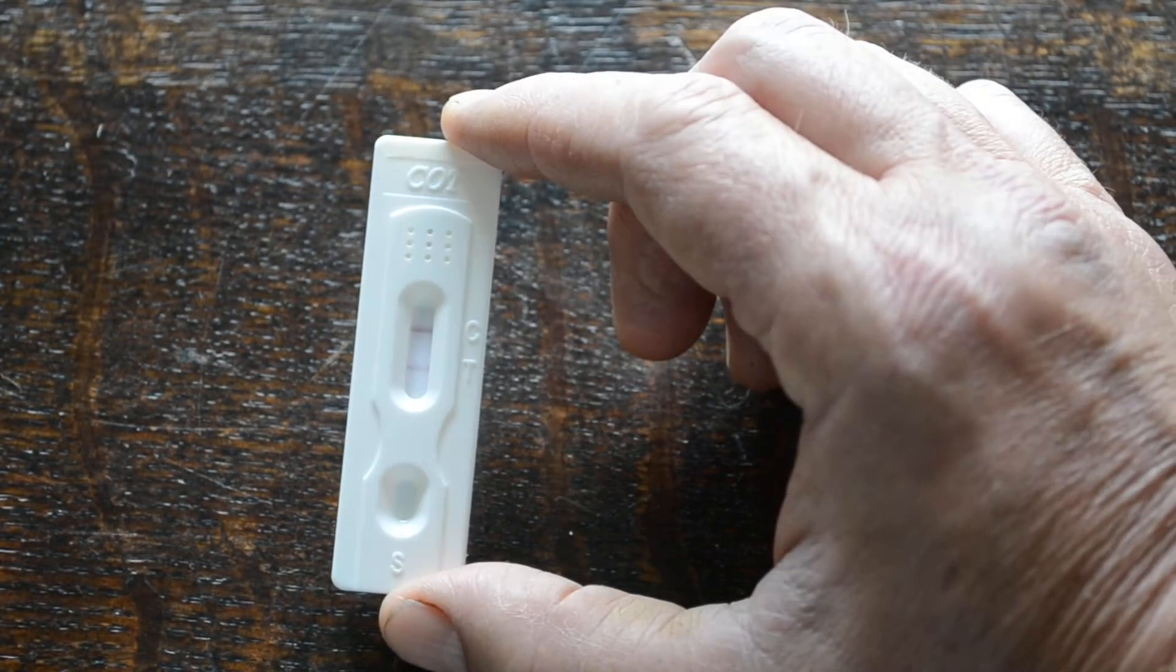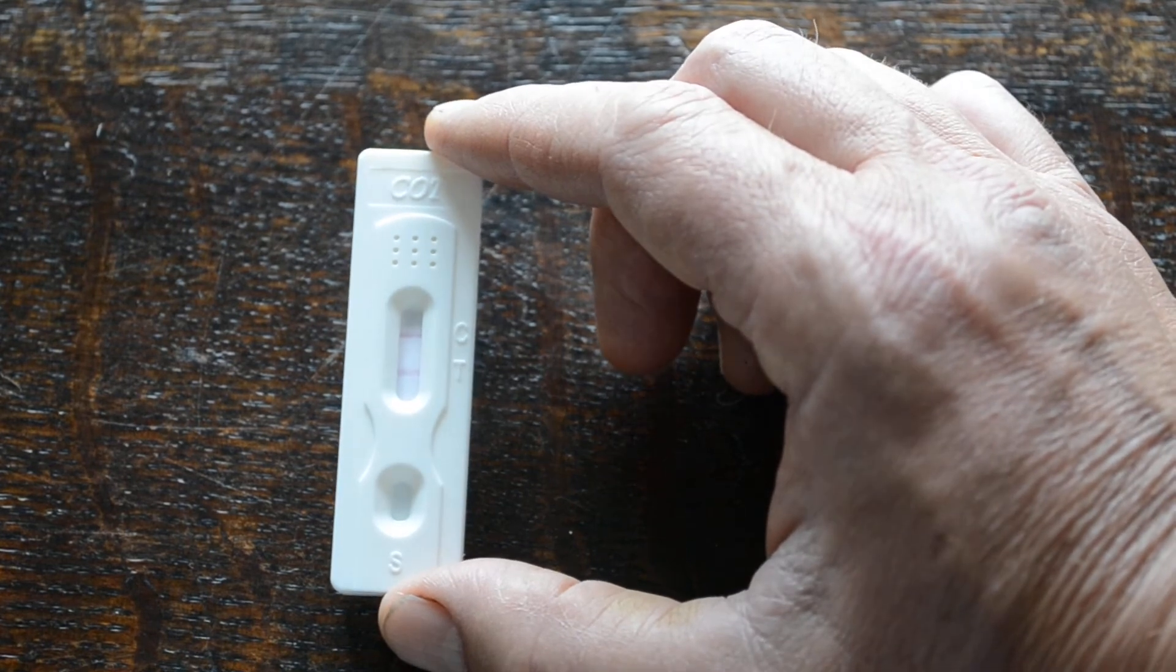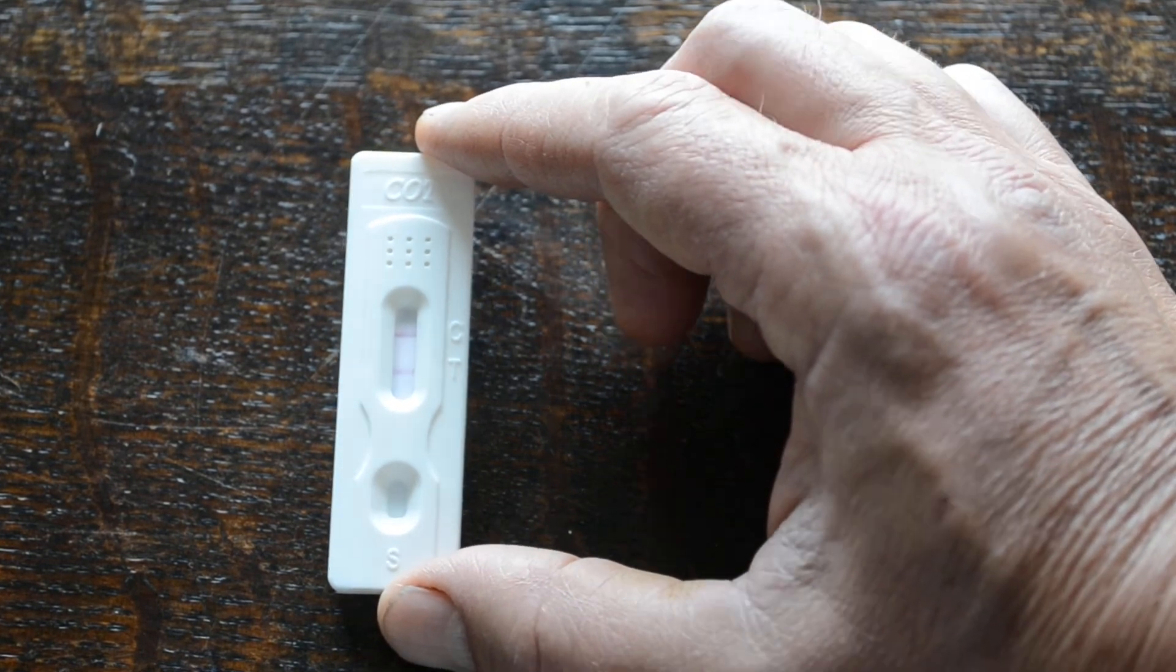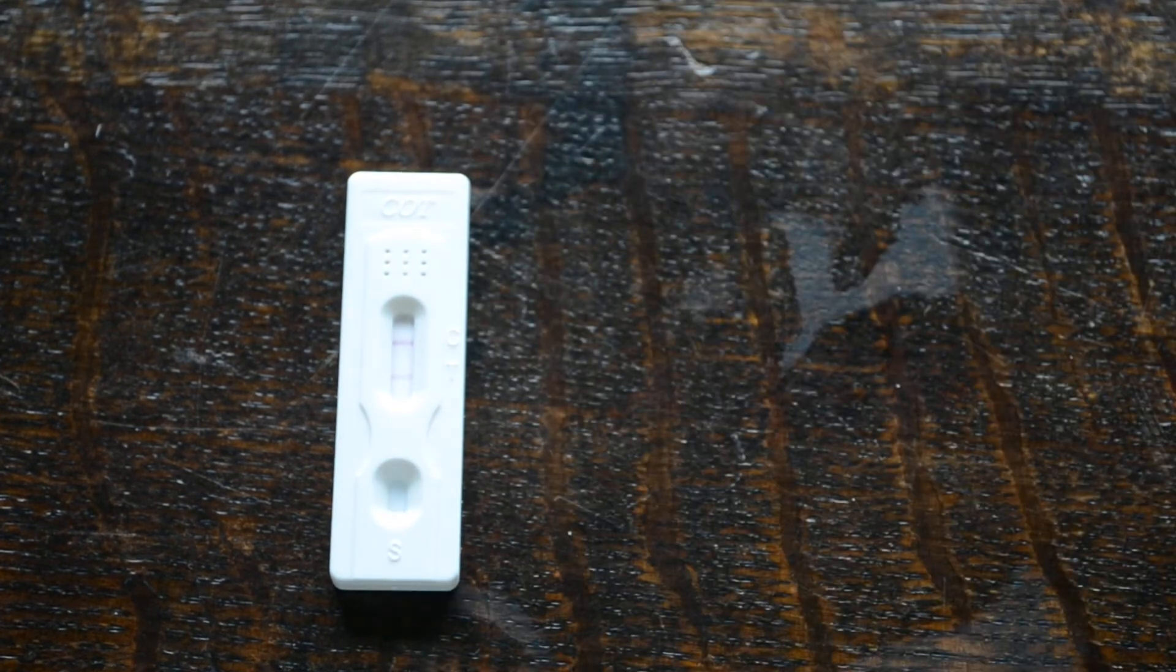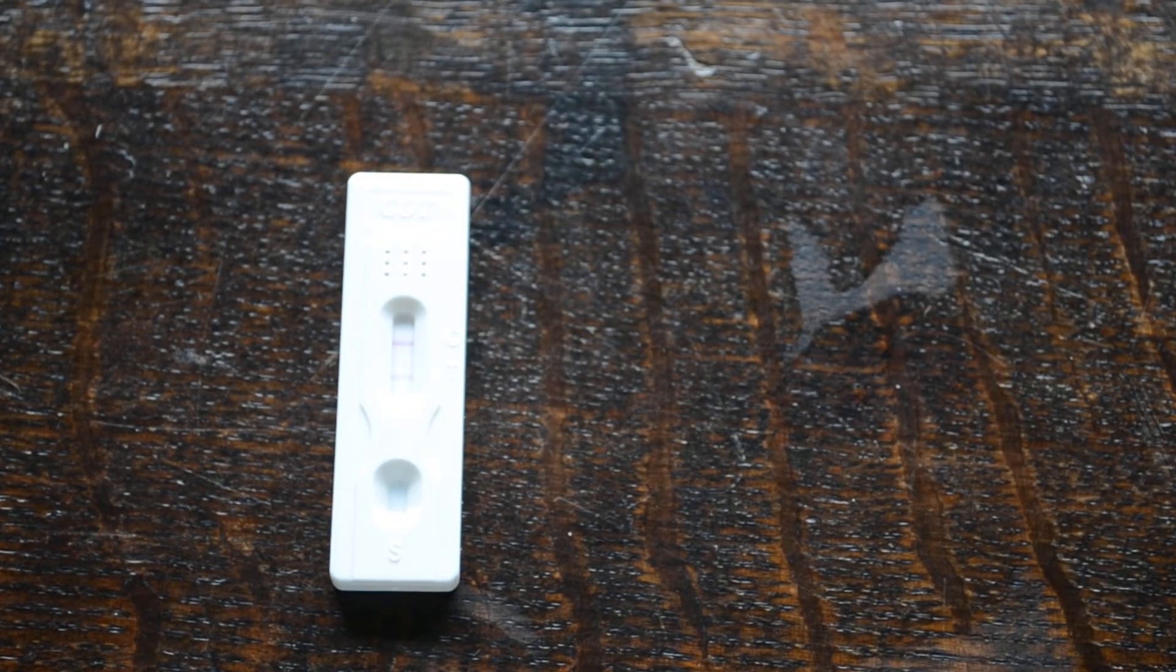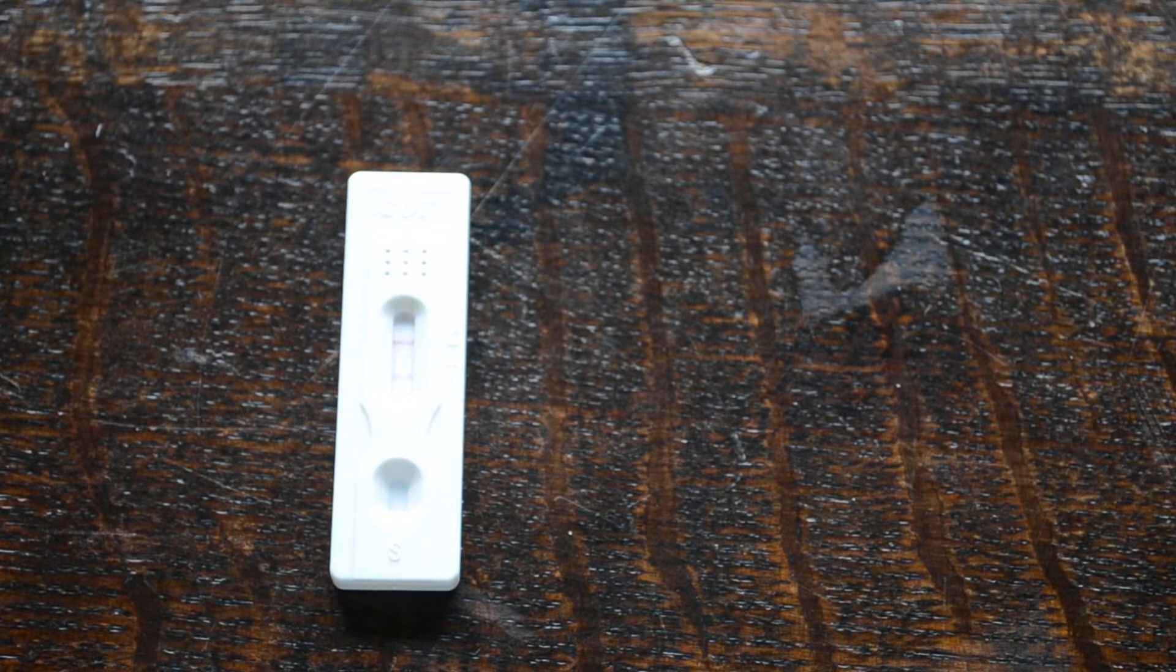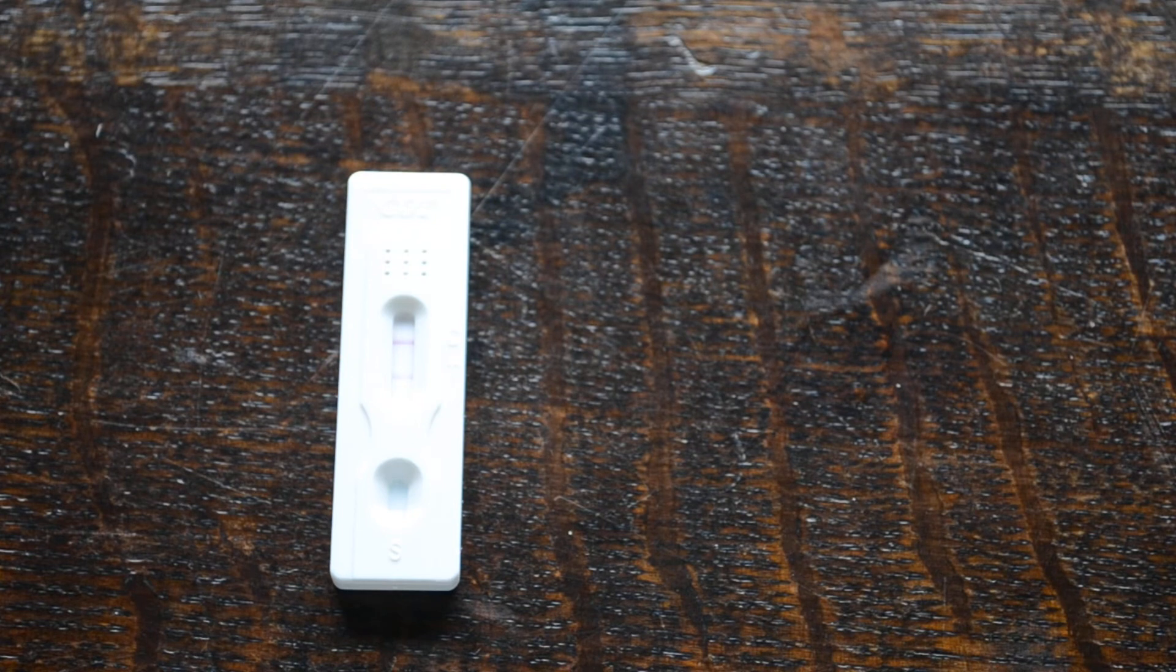But with this test result, you can see a clear negative result with both the control line and test line showing in as little as 30 seconds. There's no need to wait for the full development time when you've got clear two lines showing. That's a clear negative result. So we've performed the test for smoking on that sample and it's negative.